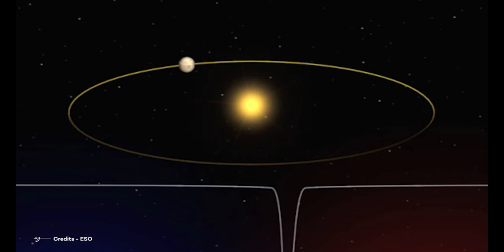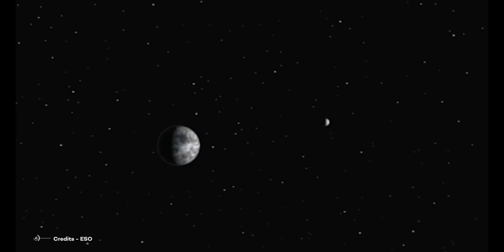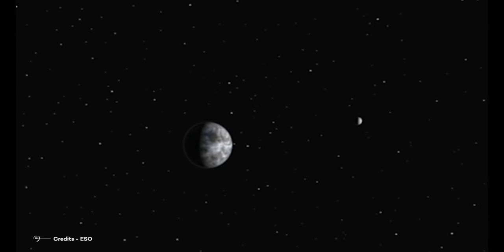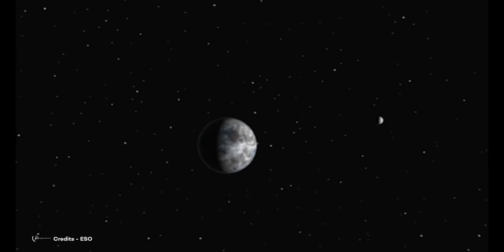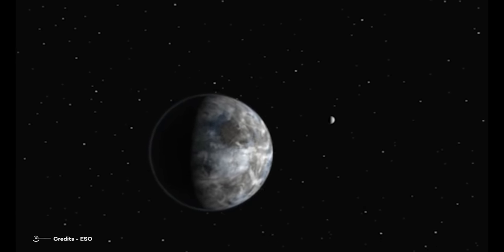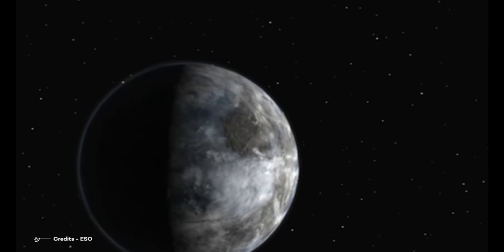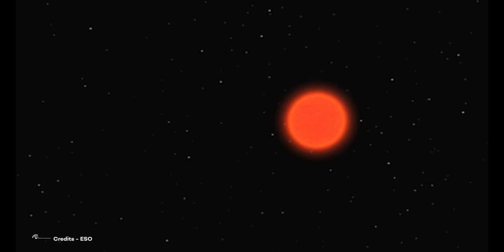And we know that because this exoplanet completes a full orbit in 13 days, and it is 14 times closer to its star than the Earth is from the Sun. This, considering the fact that its host star is a red dwarf, brings us to the conclusion that Gliese 581c is actually in the so-called habitable zone, the region around a star where water could be liquid.